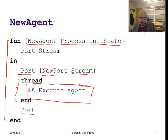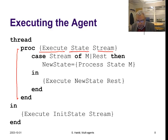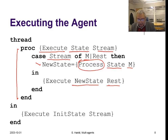What does the agent do? It sees a stream, picks every message in the stream, applies the state transition function, and moves to the next message. Here is the code for 'state execute': it takes the stream and the current state of the agent, pattern-matches on the stream, picks up the first message, applies 'process' — the state transition function — on the current state and the message to get a new state, then recurses with the new state and the remaining stream.